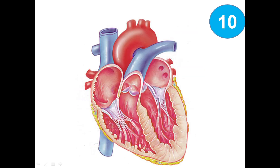The last picture in which we can see the section of the heart. We can identify the four chambers first — this one is the left atrium, this one is the right atrium, this is the left ventricle, and this one is the right ventricle.